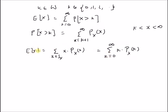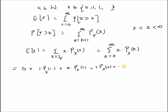Under the given conditions, the definition of expected value becomes the sum k equal to 0 to infinity of k times the probability of each value. By expanding the series in the summation, we have 0 plus 1 times P_X(1) plus 2 times P_X(2) plus 3 times P_X(3) and so on, and the (k+1)th term will be (k+1) times P_X(k+1), up to the infinite term.